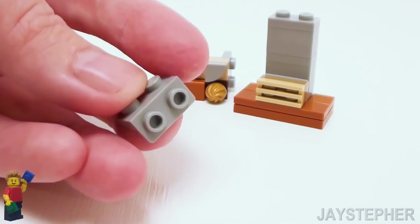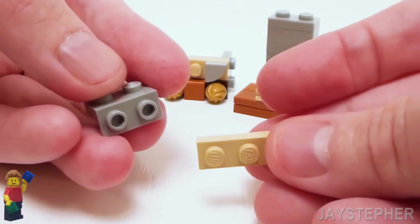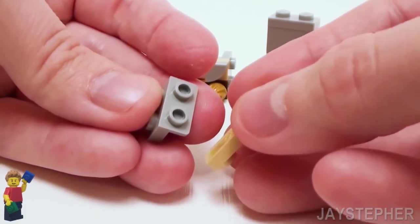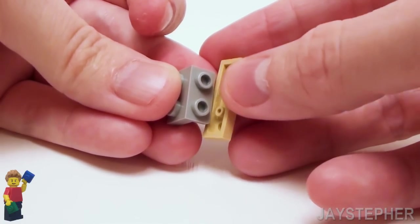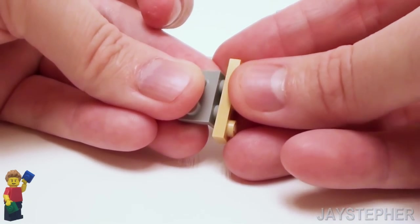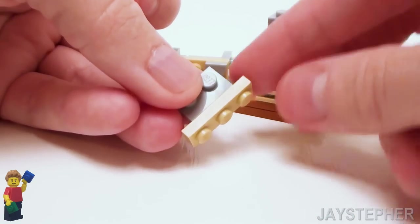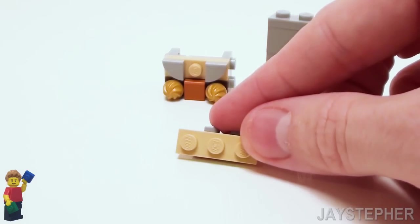Take a 1 by 2 by 1 by 2 angle plate and a 1 by 3 plate. Let's place the tubes inside the studs to where the angle plate is in the center of the 1 by 3 plate.